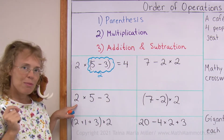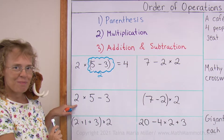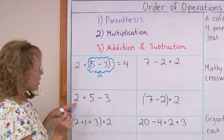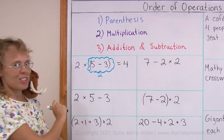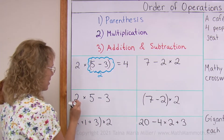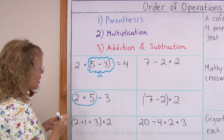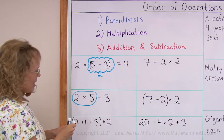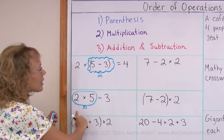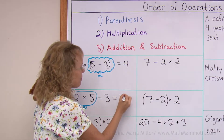Here I have the same exact problem without those parentheses. So now what happens is that the multiplication has to be done first. So this here is like my balloon and that is 10. And then we get 10 minus 3 equals 7.